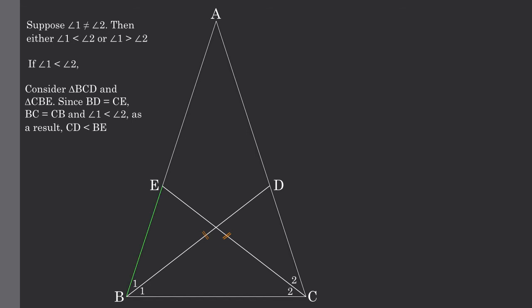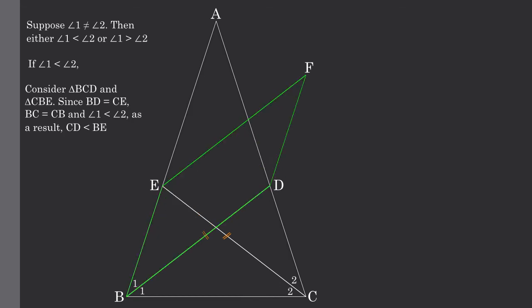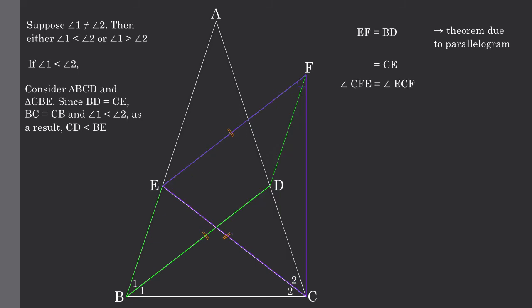Now let's draw a parallelogram using points B, E, and D, extending out to point F. We know that side EF will equal side BD based on the definition of a parallelogram. And because BD equals CE, we know that EF equals CE as well. Now let's draw a line extending from F to C. We know that angle CFE equals angle ECF based on the definition of an isosceles triangle.